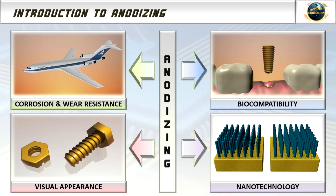Anodizing is an electrochemical technique that is used to improve the corrosion and wear resistance, as well as visual appearance or biocompatibility of anodizable metals, such as aluminum and titanium alloys. Recently, however, anodizing has also been used for creating nanoporous templates for specific applications in nanotechnology.